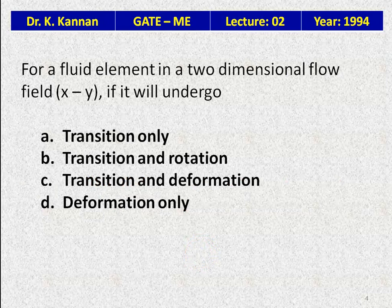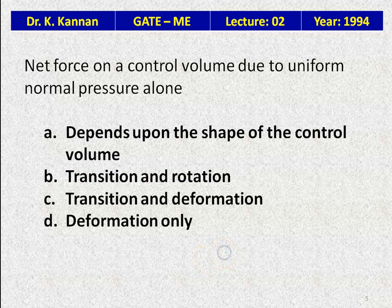For a fluid element in a two-dimensional flow field x, y, if it undergoes translation and deformation — the options are: it depends on shape and size of control volume, translation and rotation, translation and deformation, or deformation only. The correct answer is: transition and deformation. For a fluid element in a 2D flow field, it will undergo translation and deformation.